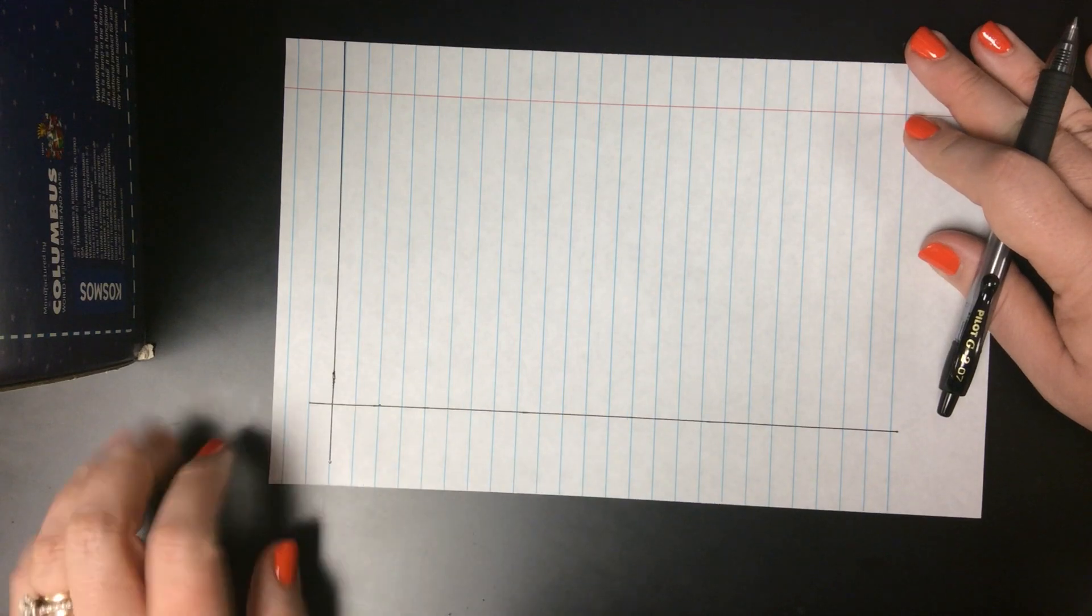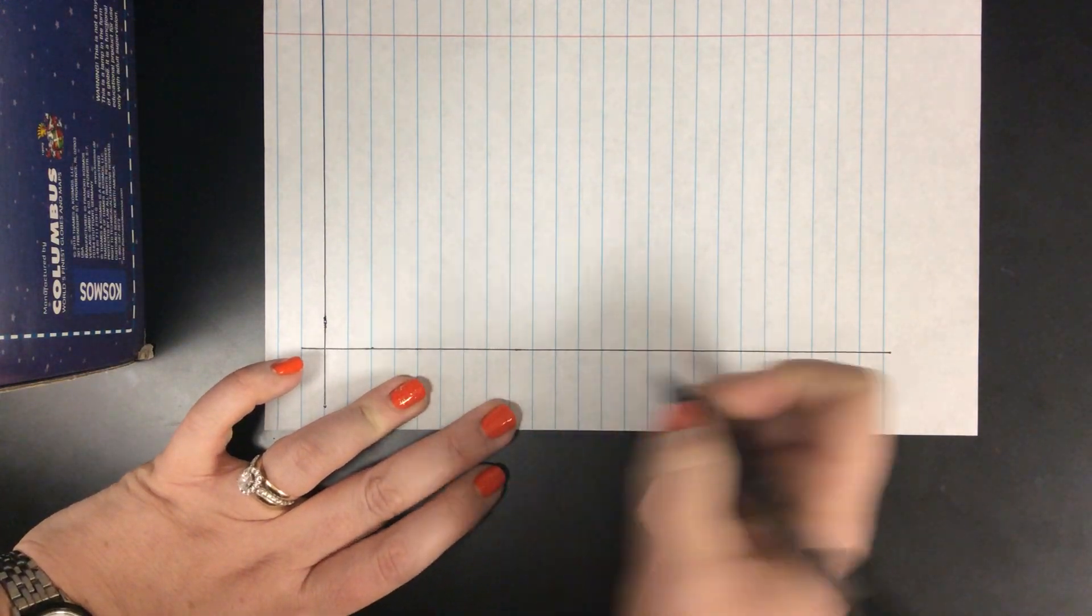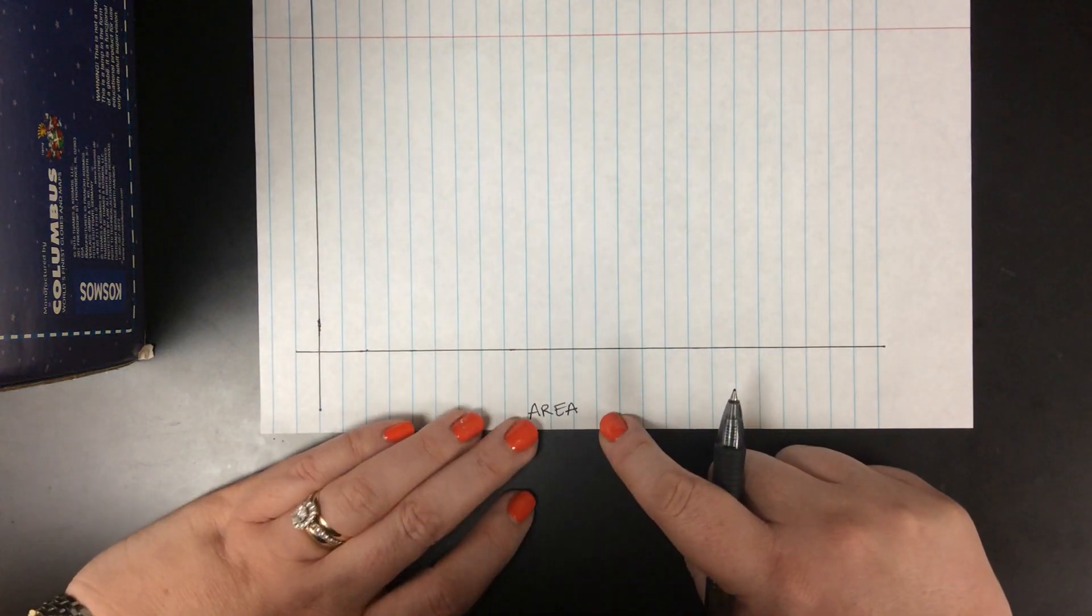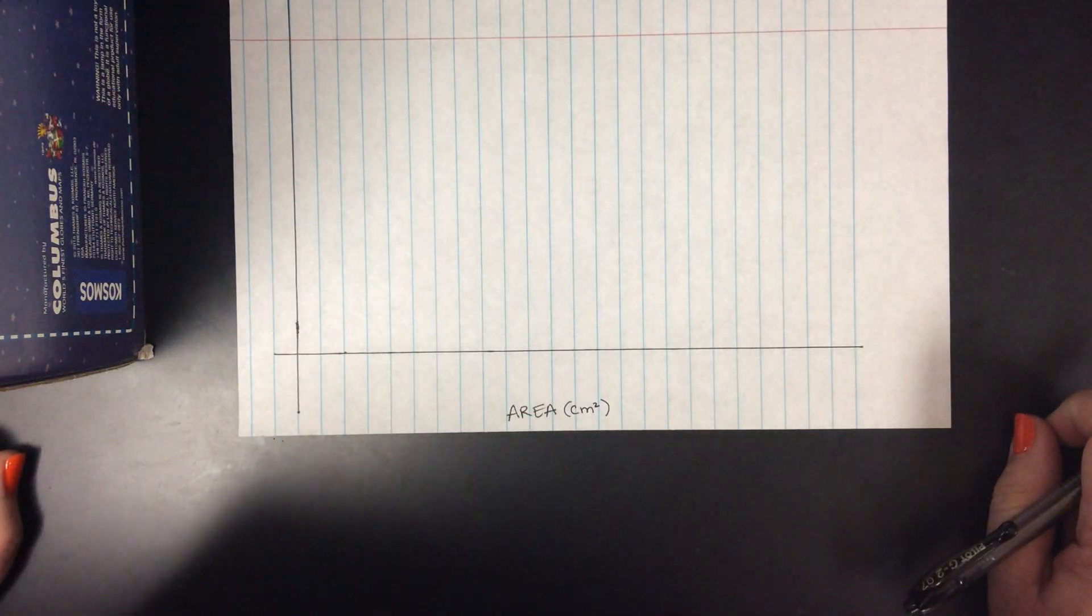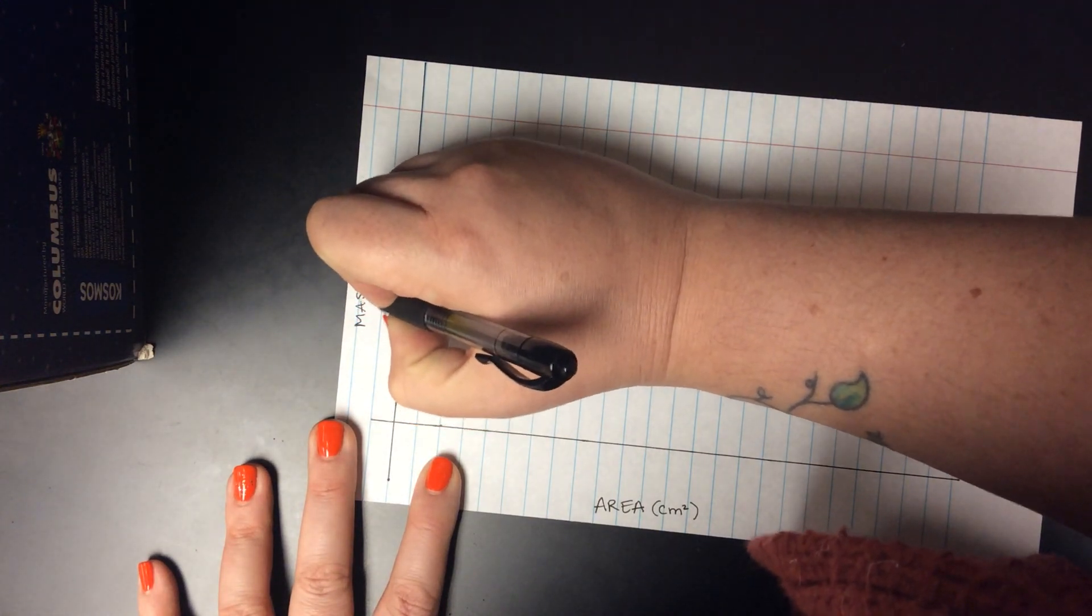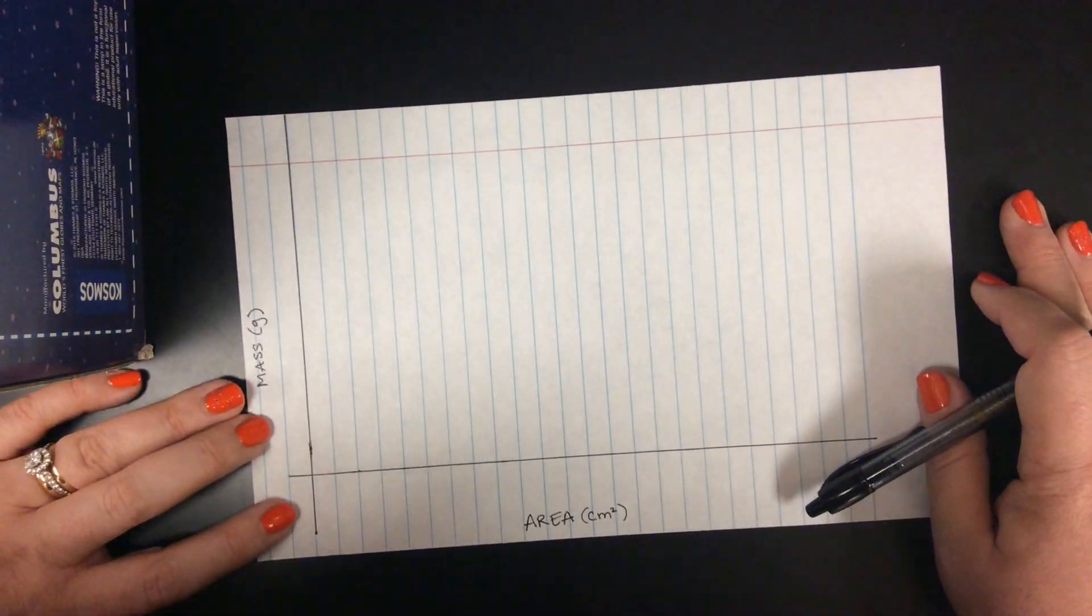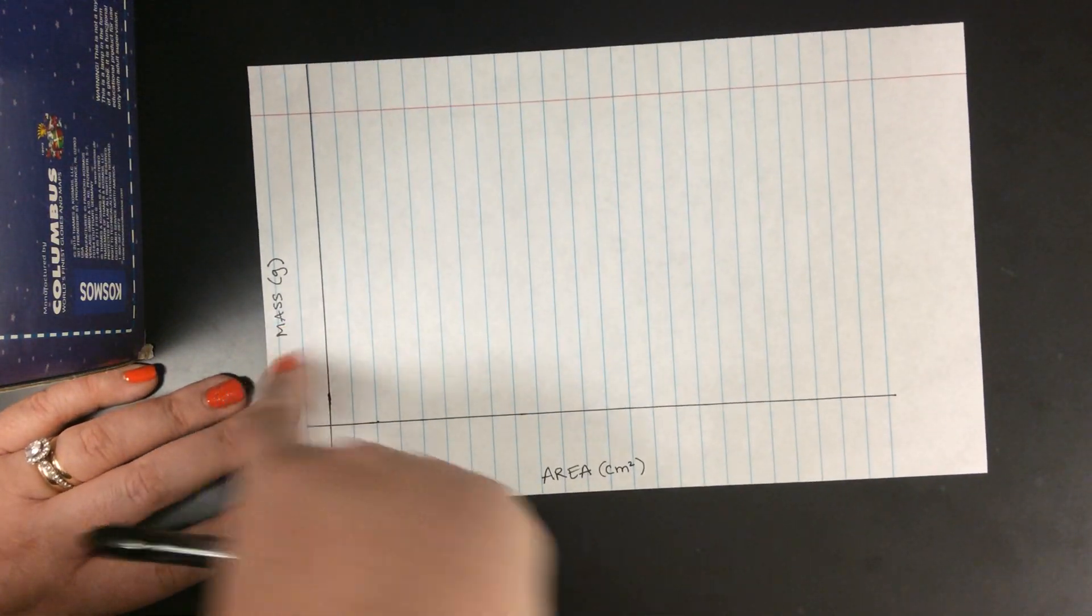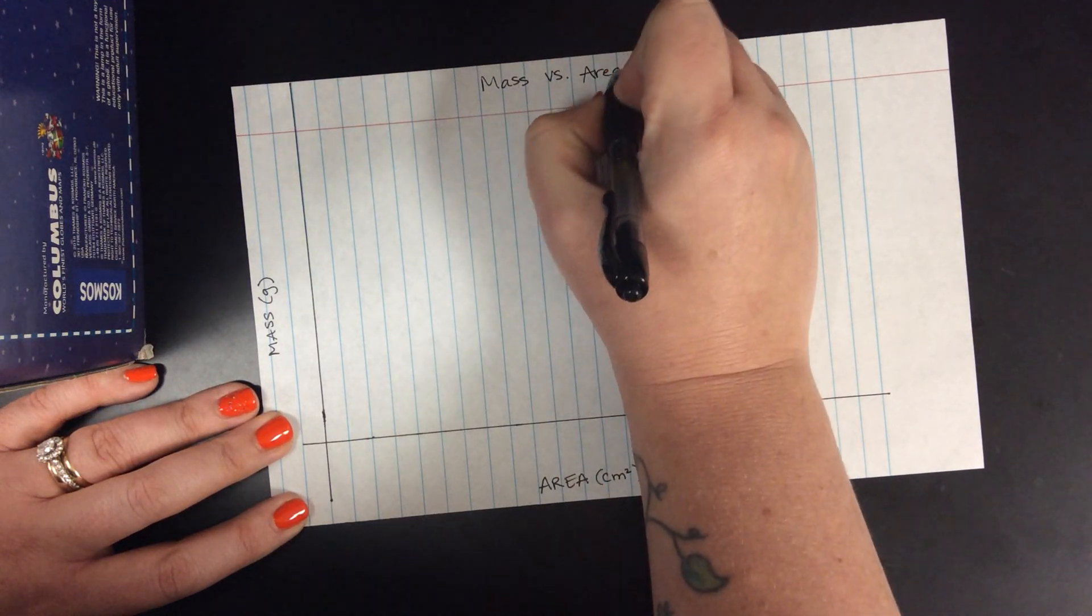So after you've drawn your axes in, the next thing that you need to do is to label them. Your x-axis for this lab is area and we have units on area. In this lab, we measured our area in centimeters squared. So add that to your label. Our y-axis is mass and our mass is measured in grams. The other thing you need to always have on a graph is a title. So we're going to title this one the easiest way to do that, y versus x: mass versus area.